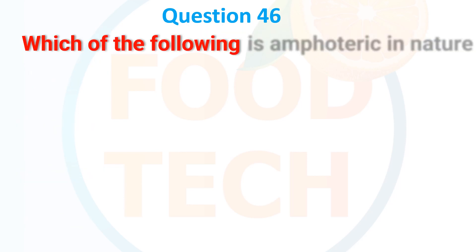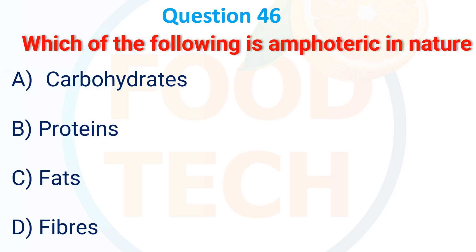Question 46. Which of the following is amphoteric in nature? A. Carbohydrate. B. Protein. C. Fat. D. Fiber. The correct answer is protein.